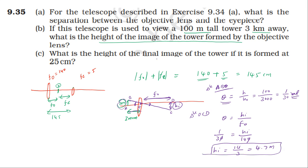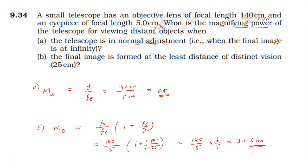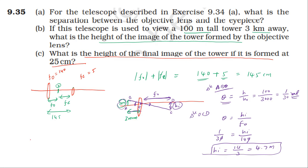What is the height of the final image of the tower if it is formed at 25 centimeters? The final image. The magnification of the eyepiece at the least distance of distinct vision is D by fe plus 1, that is 25 by 5 plus 1, so the magnification is 6.